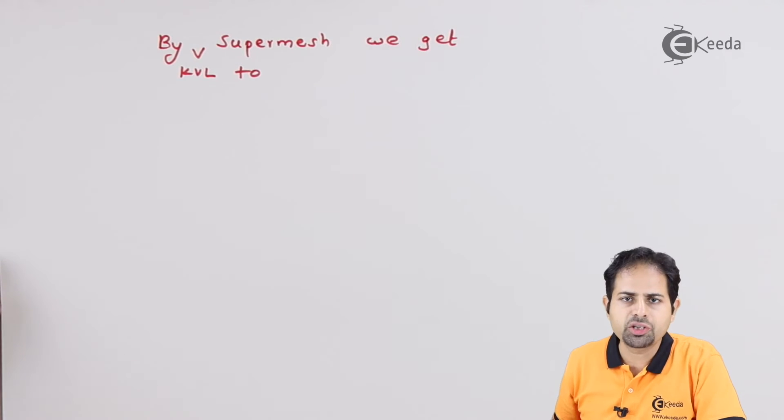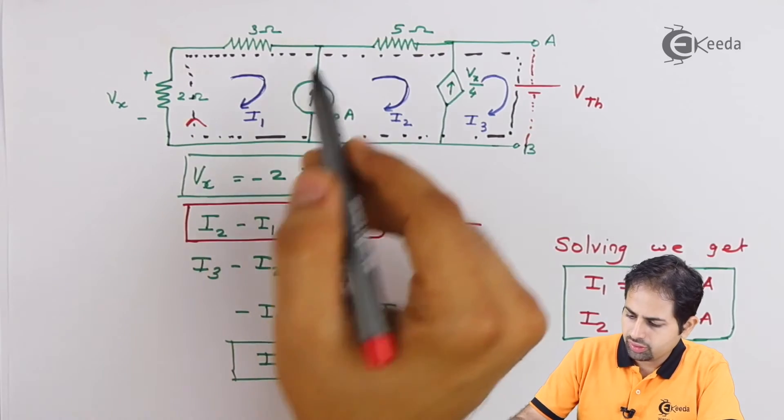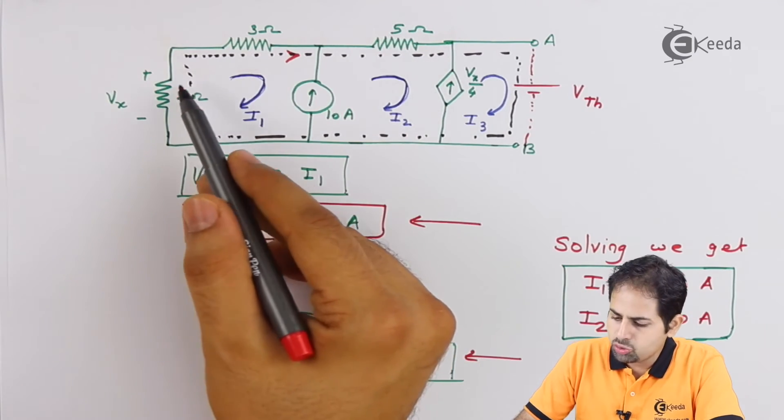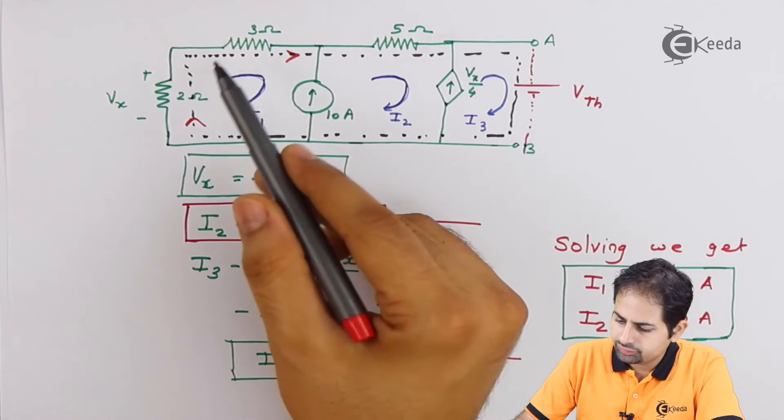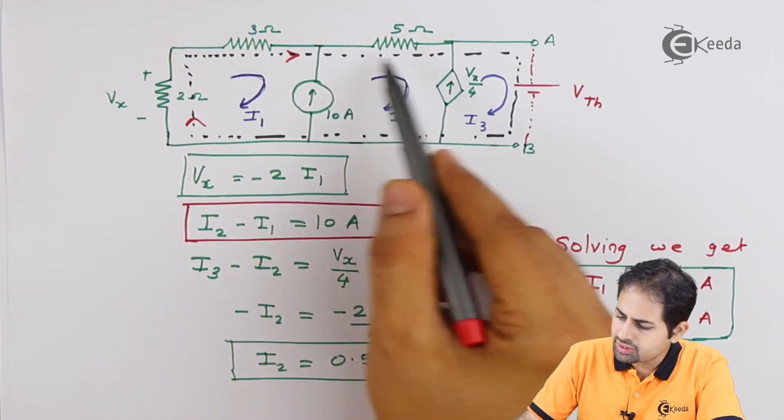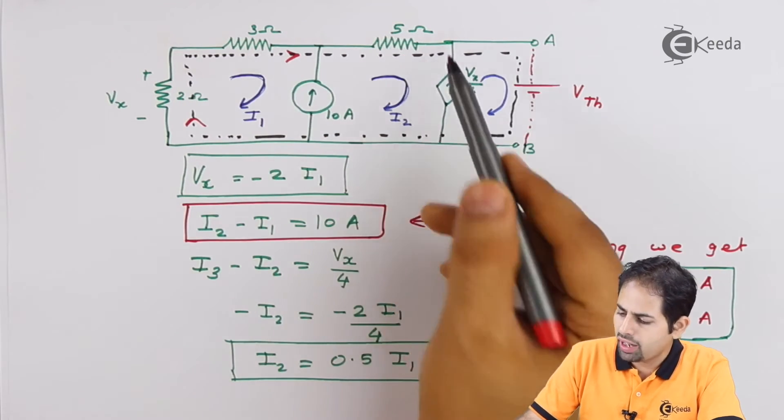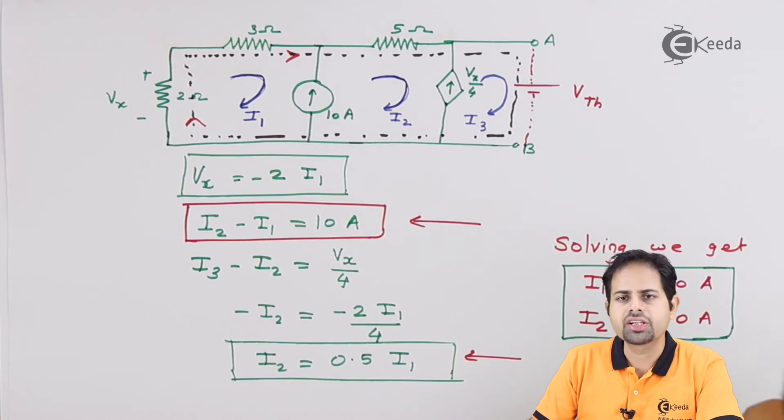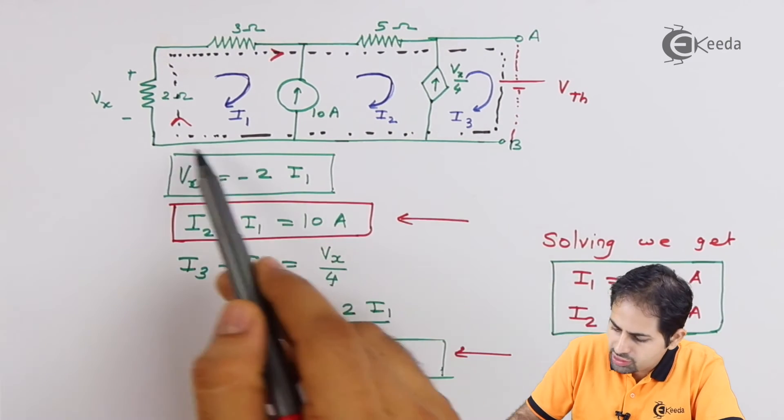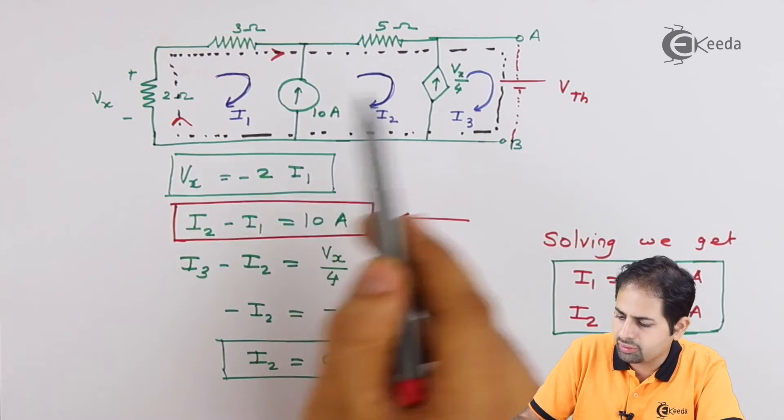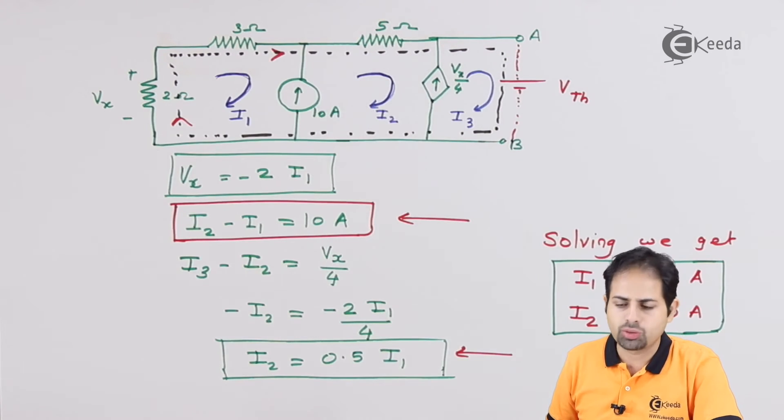By KVL to super mesh, so let us start from here, then it is going to be minus 2 into I1, then it is minus 3 into I1 and minus 5 into I2 minus Vth equal to 0. So I am going through this path, starting from this resistor, then second one, third one, and the voltage source, nothing in between because this is the condition of super mesh.